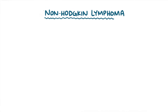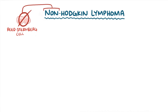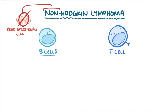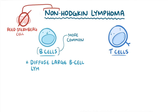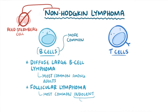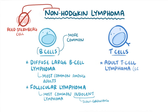As a quick recap, non-Hodgkin refers to the absence of Reed-Sternberg cells, which are characteristic of Hodgkin lymphoma. Non-Hodgkin lymphomas can originate from B cells or T cells, though they most commonly arise from B cells. Diffuse large B cell lymphoma is the most common type among adults, and follicular lymphoma is the most common indolent type. T cell lymphomas include adult T cell lymphoma, sometimes referred to as a leukemia, as well as mycosis fungoides.